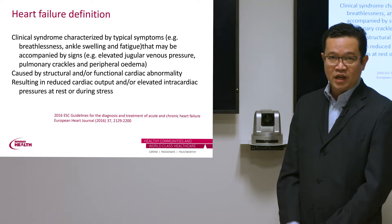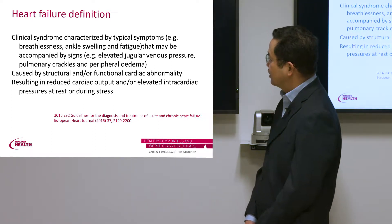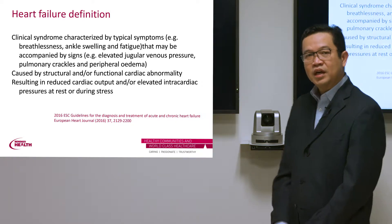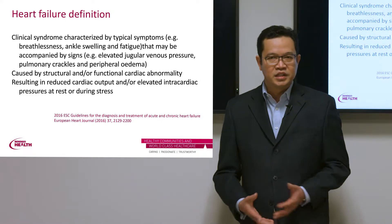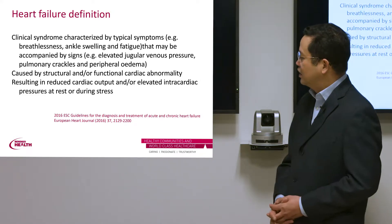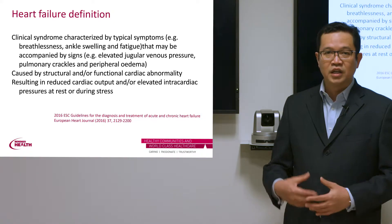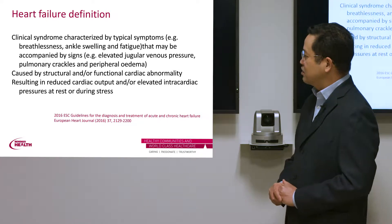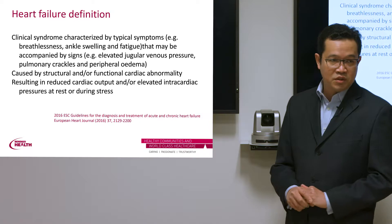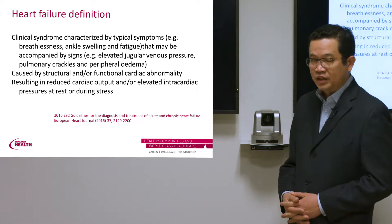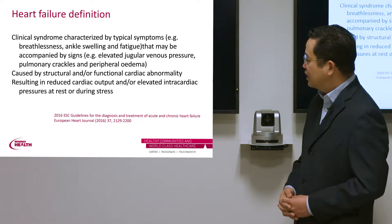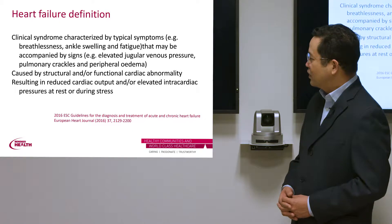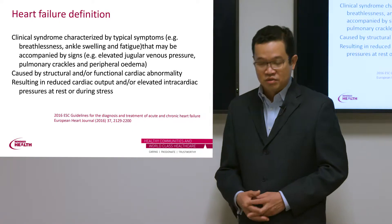It may or may not be accompanied by signs. The usual signs are elevated jugular venous pressure, pulmonary crackles, and pulmonary edema. We're going to be discussing a lot of these things in depth during the course of all the discussions during this online learning and also during the evening. It is usually caused by structural or functional cardiac abnormality, resulting in reduced cardiac output or elevated intracardiac pressures at rest or during stress.